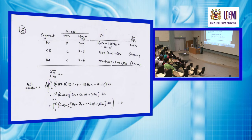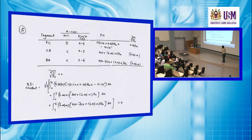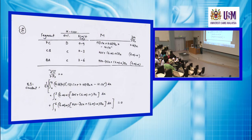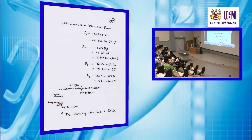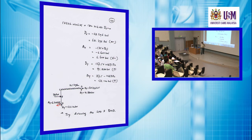Finally, you have this somewhat lengthy integration to do. Take each bending moment and ∂M/∂DX term, substitute them in, and integrate using the correct limits: 0 to 9, 0 to 3, and 3 to 6 — depending on the coordinate system used for each portion. Finally, you get an equation in terms of DX, and solving it gives a negative value for DX. A negative result means the assumed direction for the redundant at the beginning of the calculation was incorrect; the correct direction is opposite to that assumed.